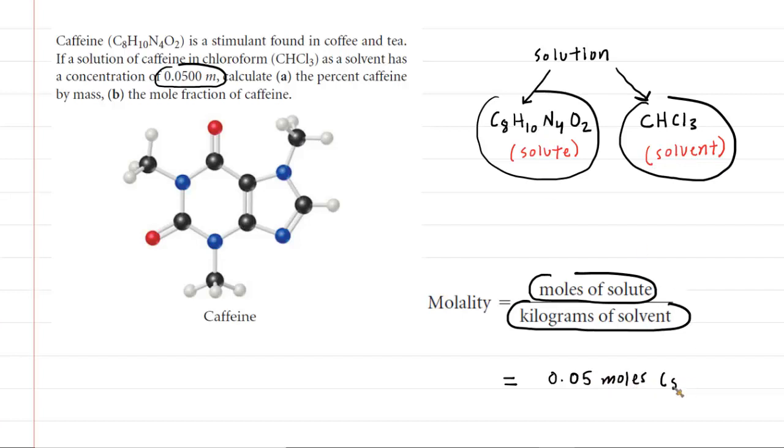So we already know the moles of caffeine in this solution. And then that would be divided by just 1 kilogram of solvent, which is the CHCl3. Notice if you divide 0.05 by 1, of course, you still get 0.05.